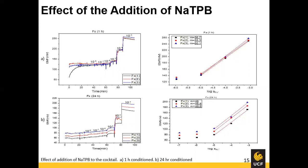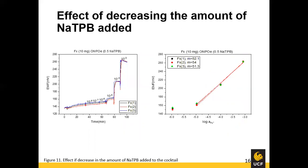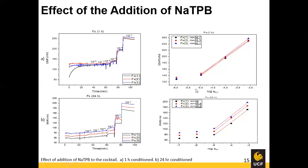Even though the limit of detection was a little low — from 10⁻³ to 10⁻⁵ — we observed the Nernstian slope, which is a good start. We also compared conditioning times: one hour versus 24 hours. One hour was better, probably because prolonged conditioning causes the membrane to start leaching. We also tested reducing the NaTPB amount to a 0.5-to-1 ratio with the ion pair, which brought the slope slightly down into the sub-Nernstian range, but still in the 50s millivolts — better than before.